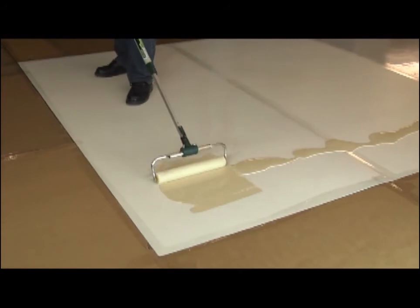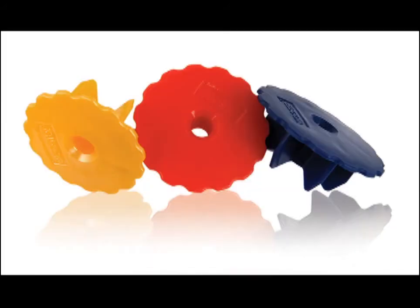Worcester has even color-coded these gauges to match three different mill thicknesses. Choose yellow for 4 mils, red for 12 mils, and blue for 22 mils.